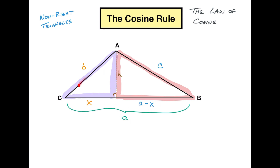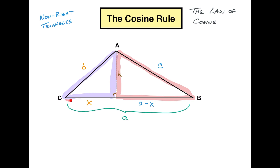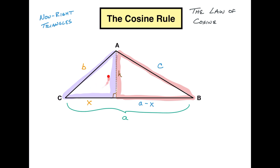X plus A minus X is just A. So we're going to use these two pieces and hobble together an equation: if I've got side B, side A, and angle C, can we find the missing sides and missing angles? In the purple triangle, cosine of C equals X over B — adjacent over hypotenuse. If I multiply both sides by B, then X equals B cosine C.